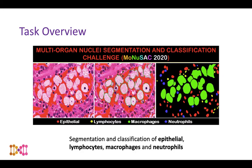The overall task we were given was to segment and classify epithelial cells, lymphocytes, macrophages, and neutrophils. This is a task of importance because if we can locate these individual cells, we can better understand the role of immune cells in cancer.